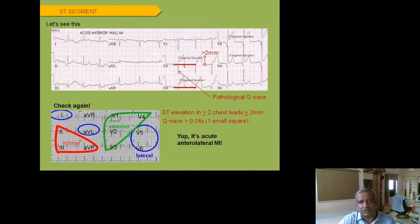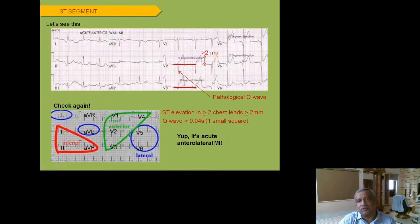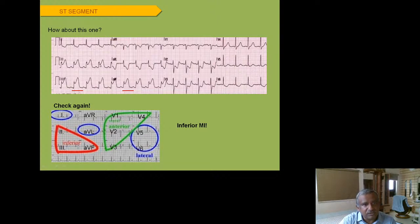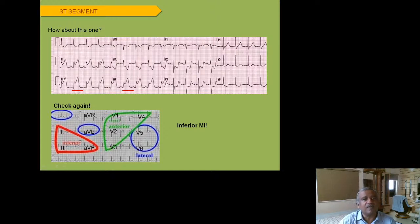In an anterolateral MI example, ST elevation is seen in V1, V2, V3 with ST elevation in Lead I and aVL of more than 1 mm, and also in V5 and V6 — so V1–V6 plus I and aVL elevation gives a lateral plus anterior (anterolateral) MI. In inferior wall MI, Leads II, III, and aVF show ST elevation with reciprocal ST depression in V1–V6 — the same vector causing ST elevation in inferior leads causes ST depression in the opposite anterior leads. Always take right-sided leads for inferior wall MI.